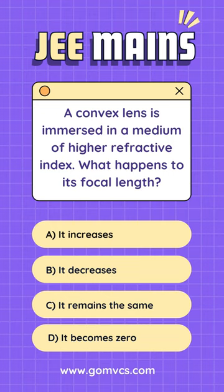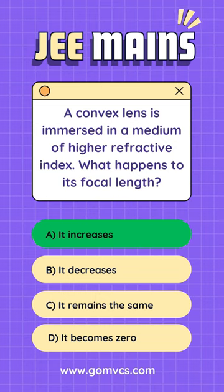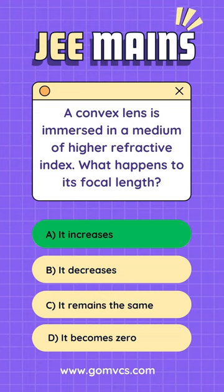The correct answer is A. It increases. Explanation: When a convex lens is immersed in a medium of higher refractive index, the speed of light decreases in the lens, causing the lens to behave as if it were in a less optically dense medium. As a result, the focal length increases.